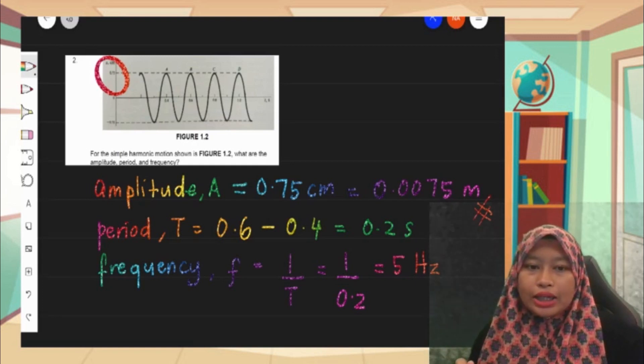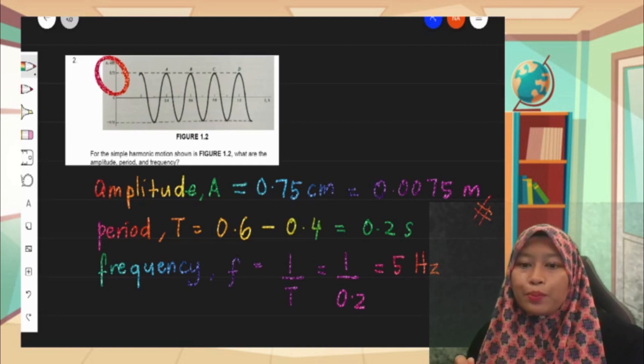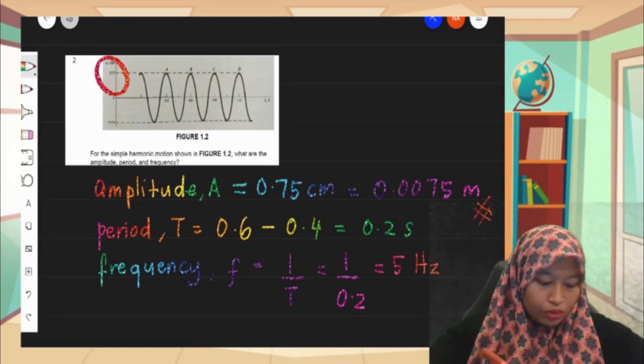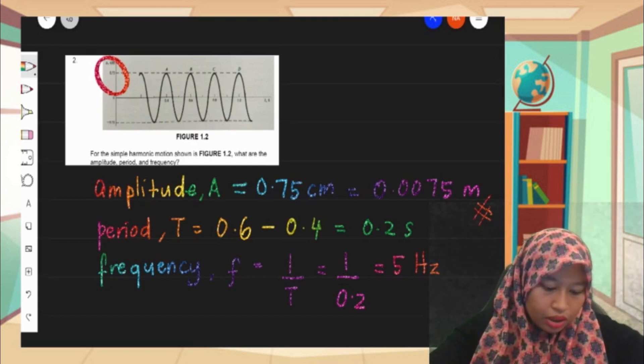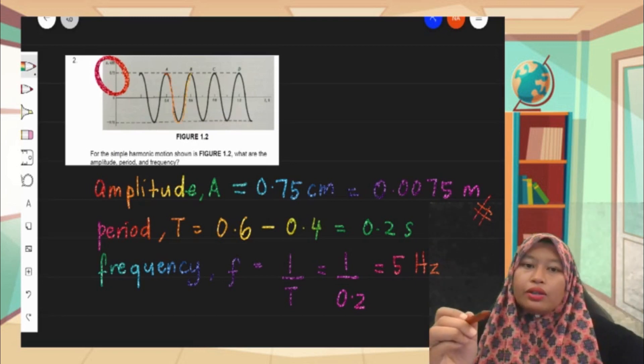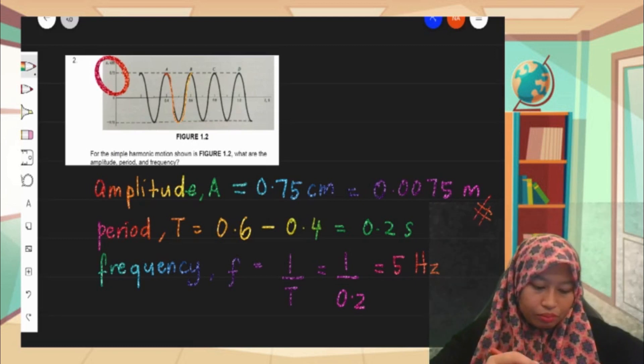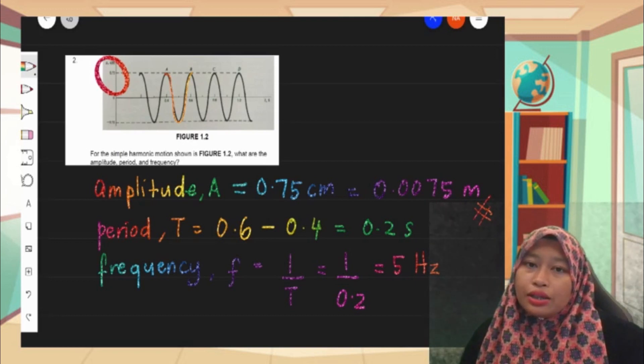So settled for the amplitude. For the period, we know that period is basically the time taken to complete one oscillation. So here we have a few oscillations - find one complete oscillation. So I found one complete oscillation from point A to point B. From point A to point B is one complete oscillation, so the time taken to complete point A to point B is 0.6 minus 0.4, which is 0.2 second. So our period is 0.2 second.